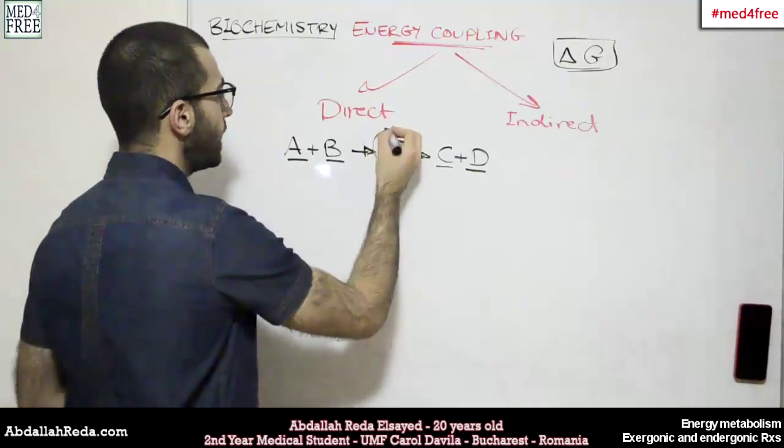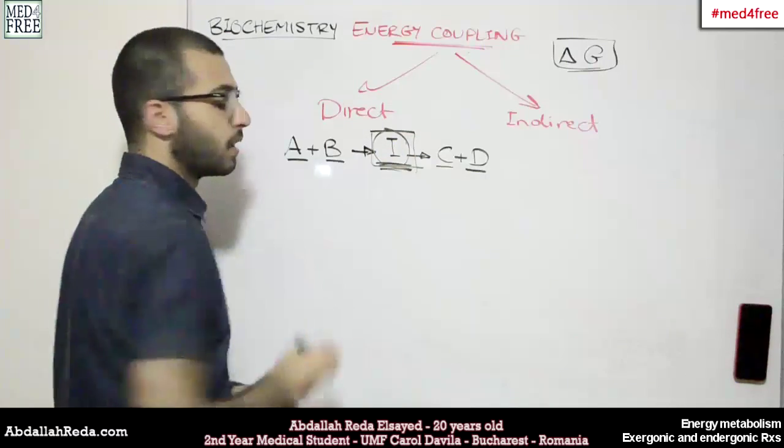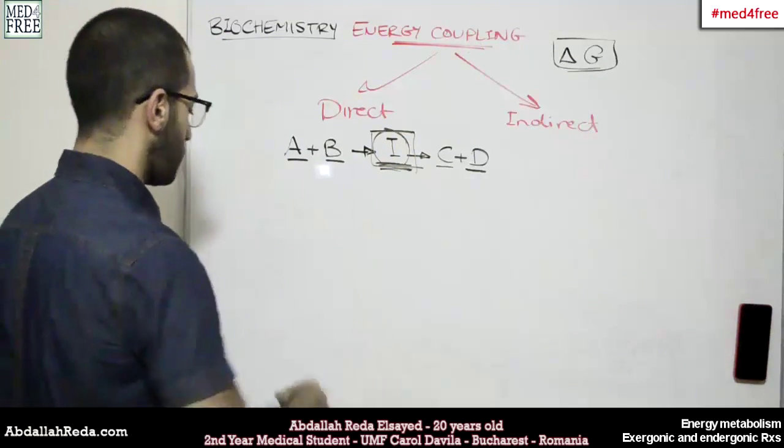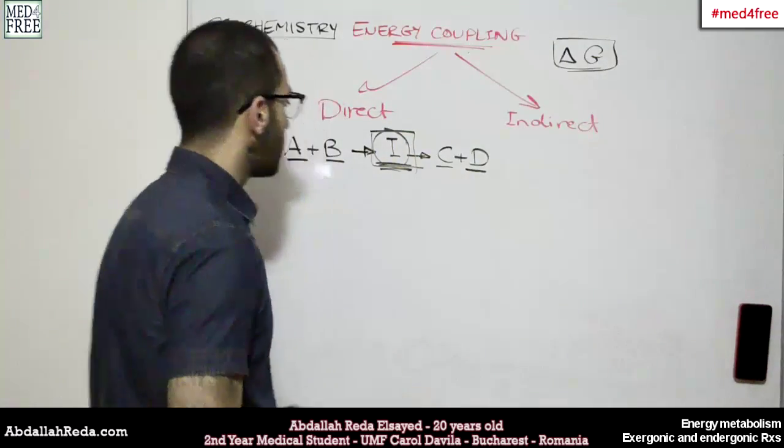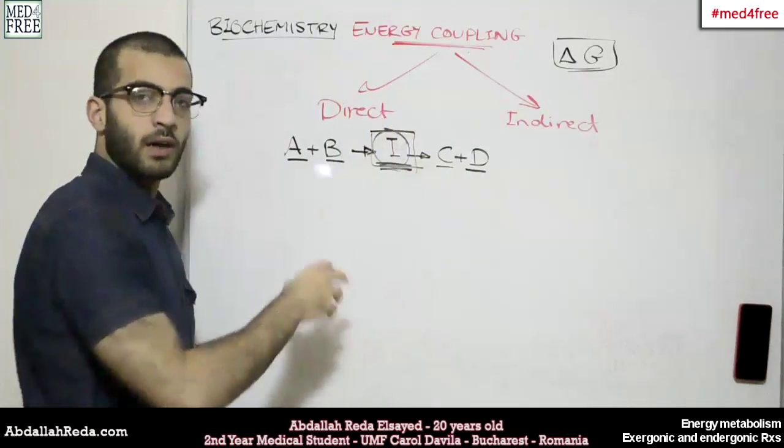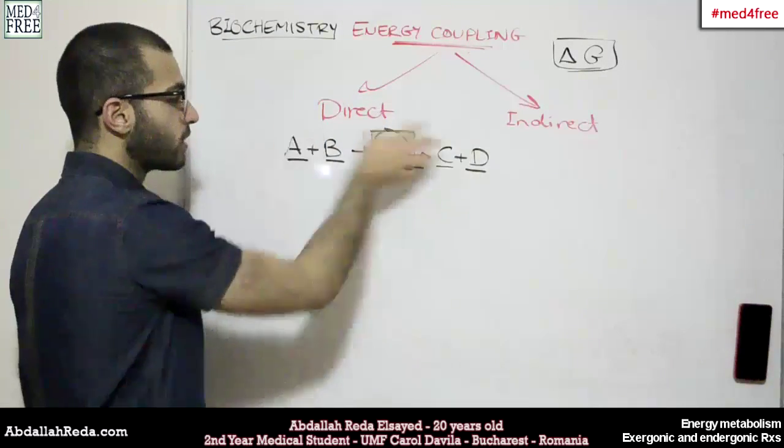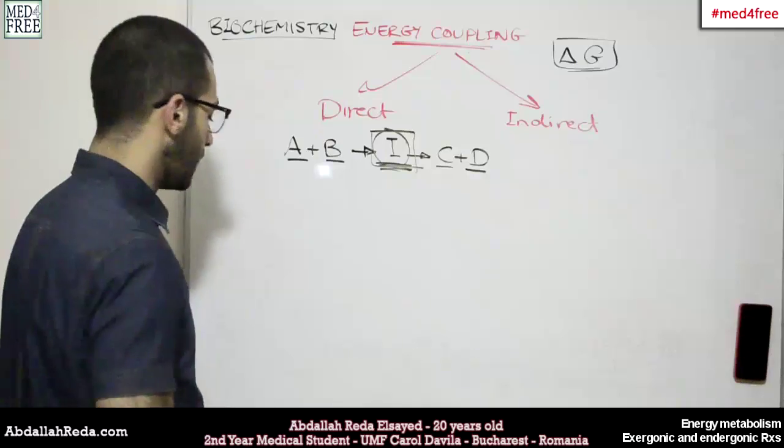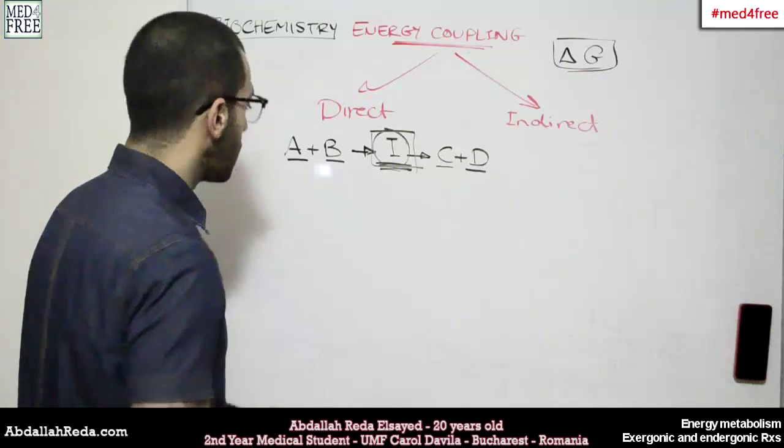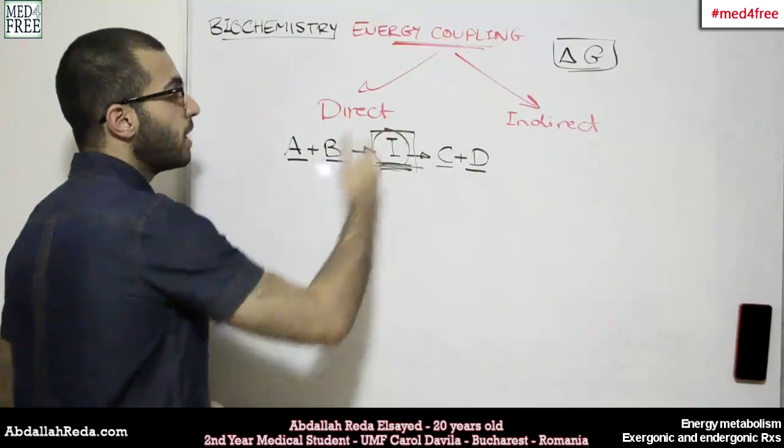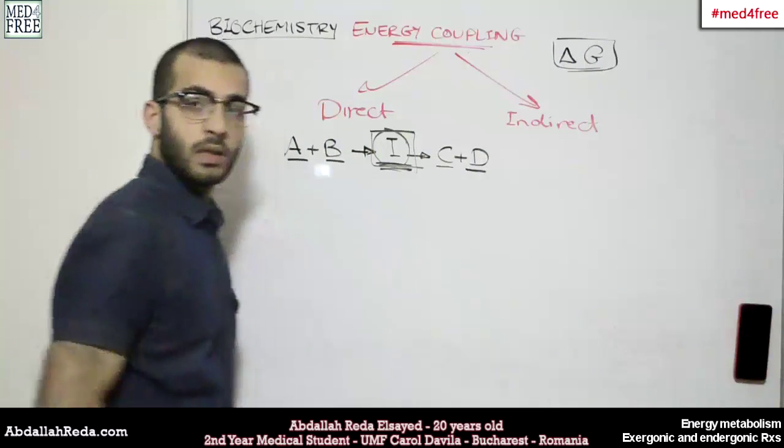And throughout this intermediate compound these two reactions are chemically related. And thus we can sum the delta G.